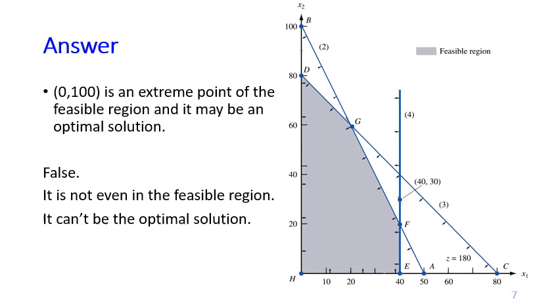The answer is false. The point (0, 100) is not even in the feasible region, therefore it cannot be the optimal solution.